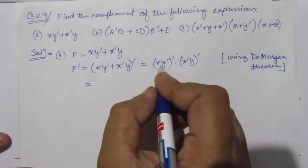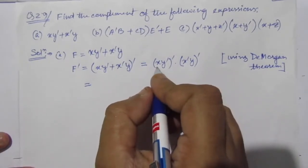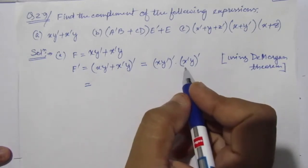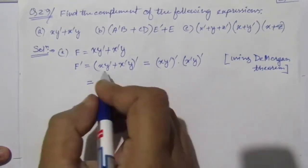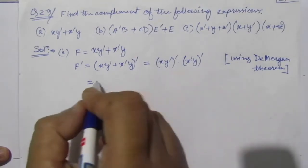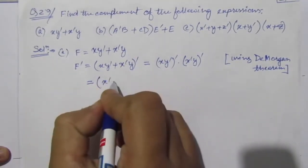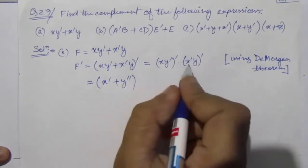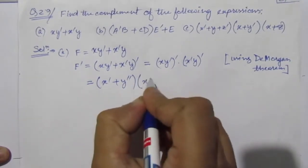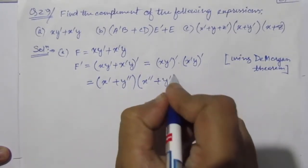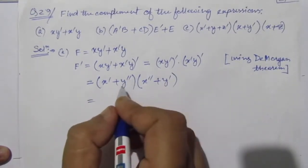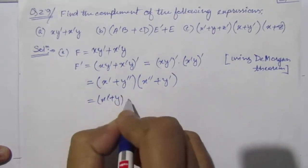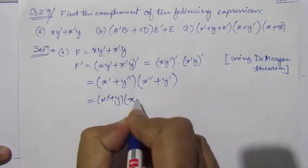For xy̅ whole bar, if we consider this as A and B, then A·B whole bar. Using De Morgan's theorem again, we can rewrite xy̅ whole bar as x̅ plus y̅ bar, where the double bar gives us simply y. So this becomes x̅ plus y, multiplied into x plus y̅.